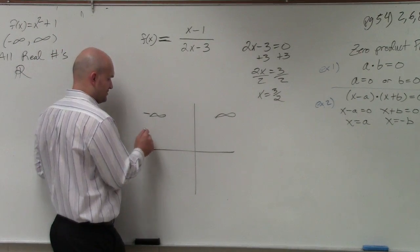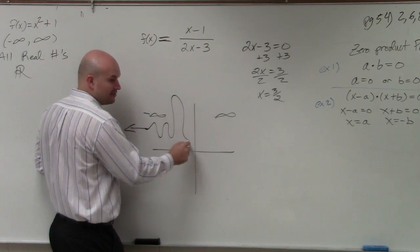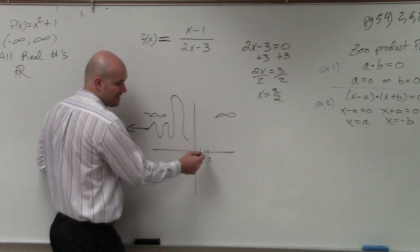So we have our function. Our function goes all the way to infinity. It can do whatever stuff it wants to do. But at 3 halves, here's 1, here's 2, 3 halves is like right here.